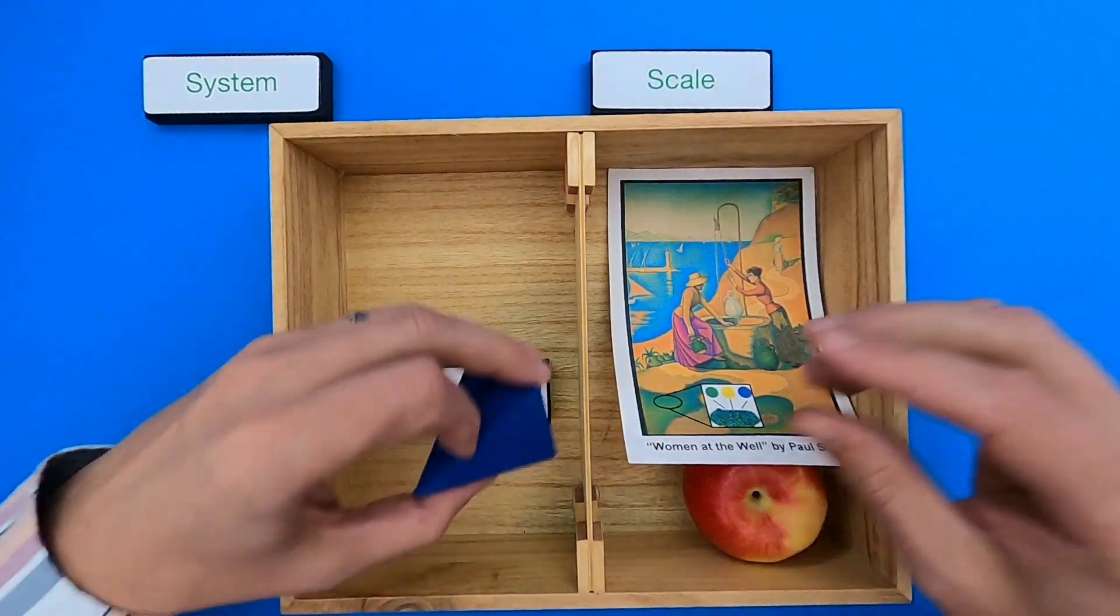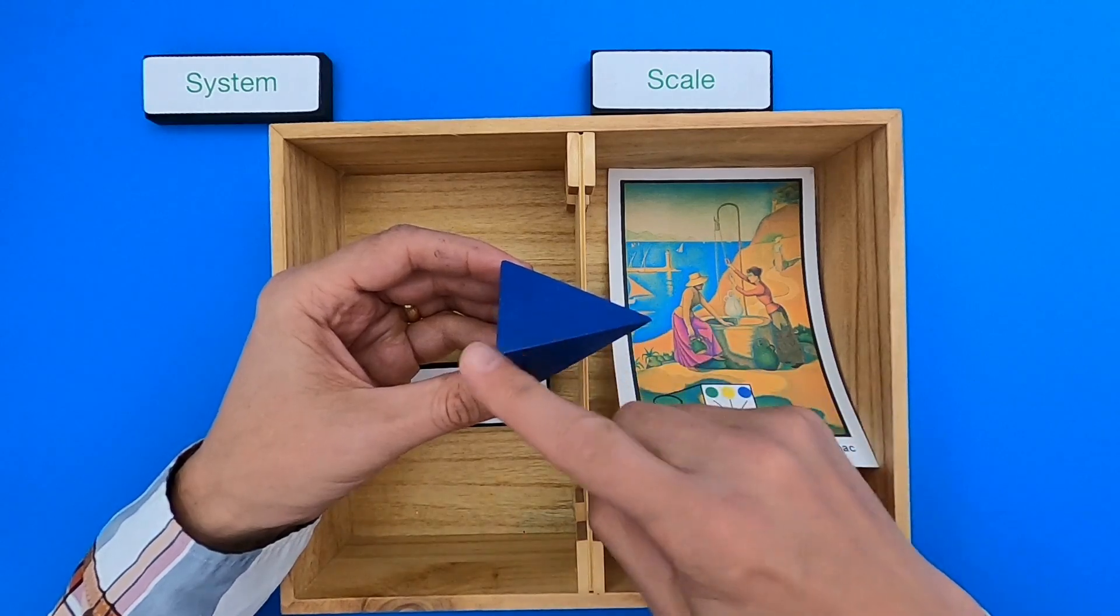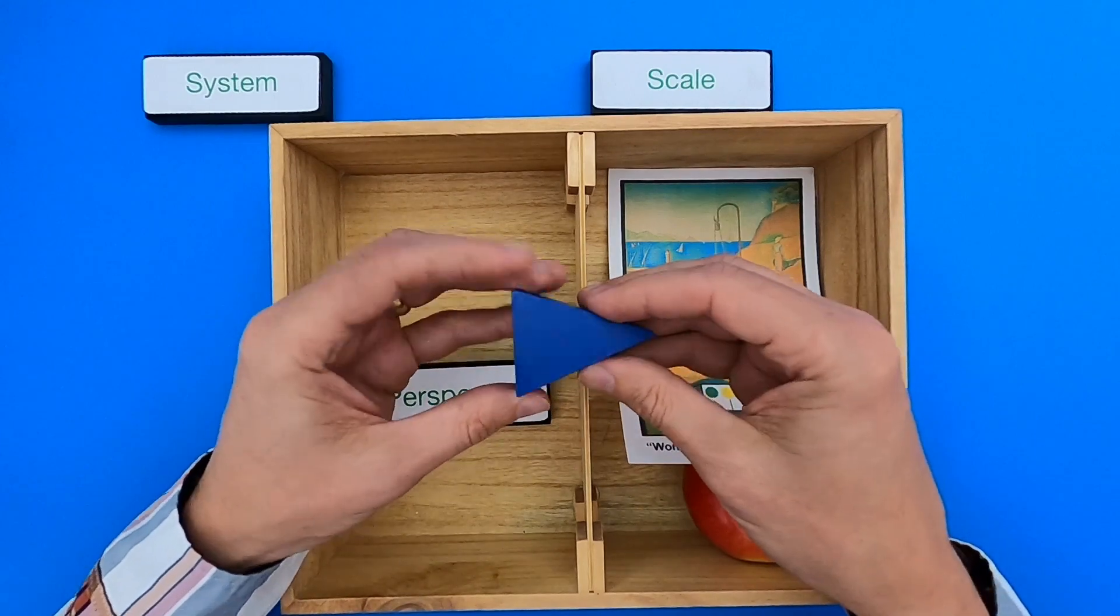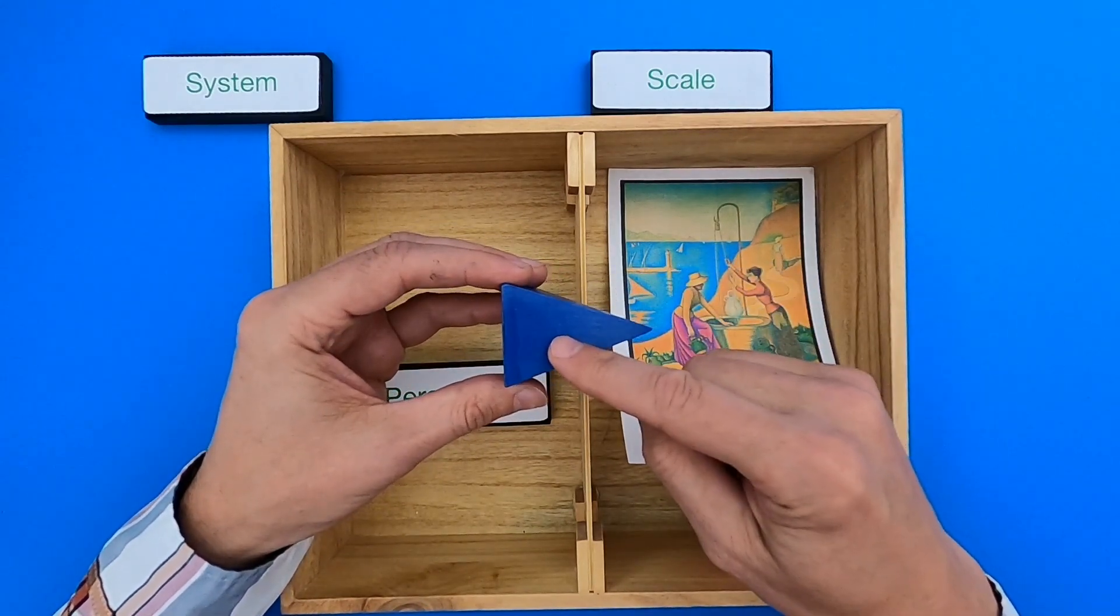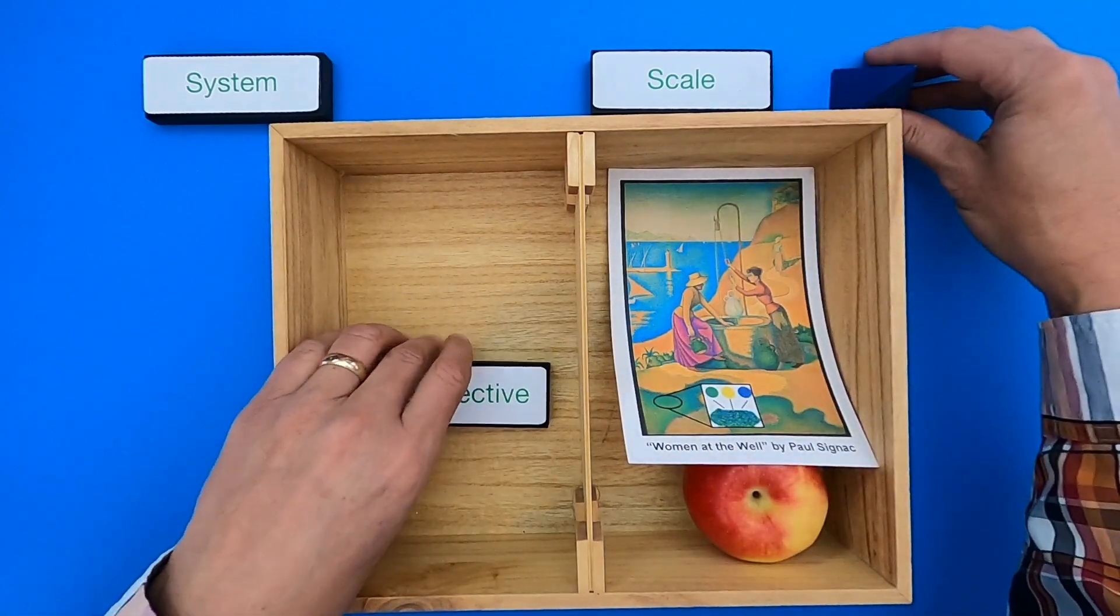Remember, our object for scale is this pyramid because it shows from the very small to the very large. But even if you think about this object which is made of wood, imagine if we're thinking it about the scale of the particles within the wood. So that gives us a totally different perspective.